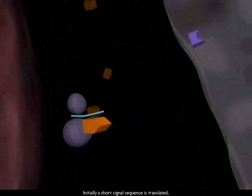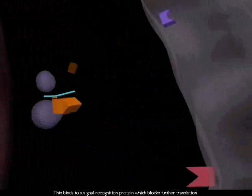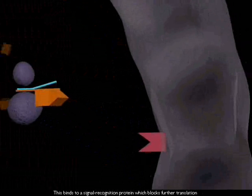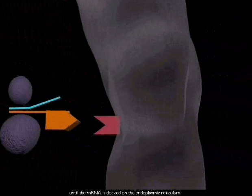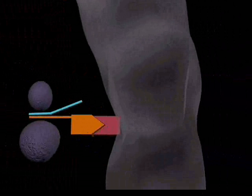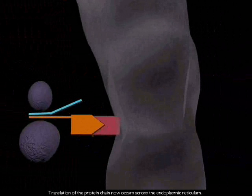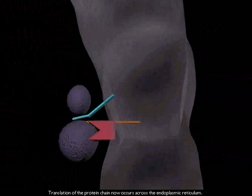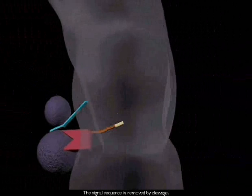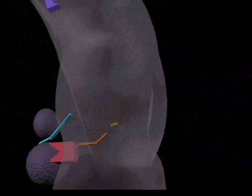Initially, a short signal sequence is translated. This binds to a signal recognition protein, which blocks further translation until the mRNA is docked on the endoplasmic reticulum. Translation of the protein chain now occurs across the endoplasmic reticulum. The signal sequence is removed by cleavage.